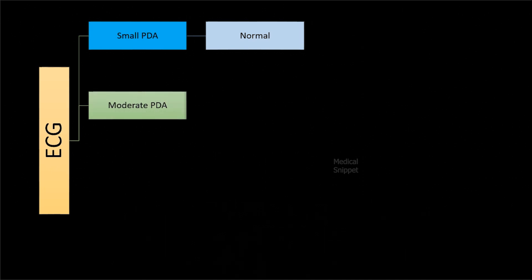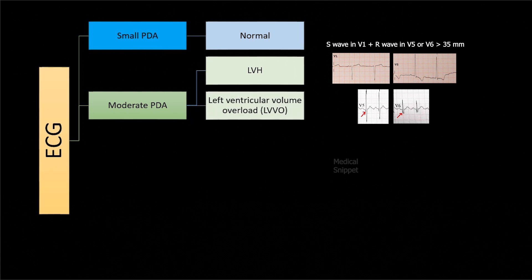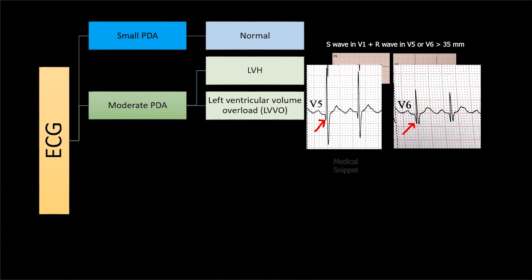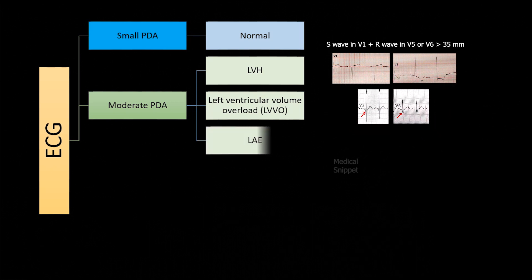In moderate PDA, there is left ventricular hypertrophy and left ventricular volume overload state, that is Q wave in V4, V5, and V6 leads.